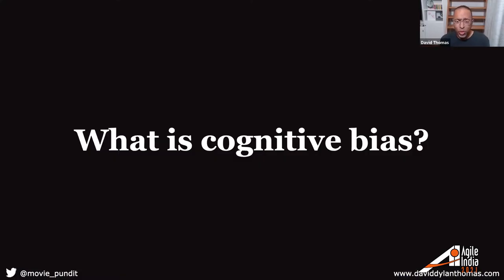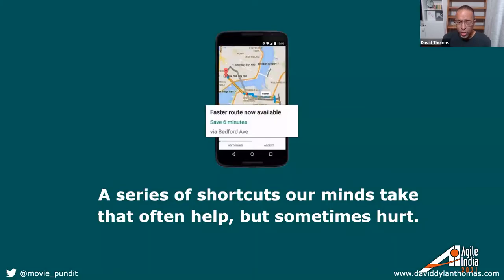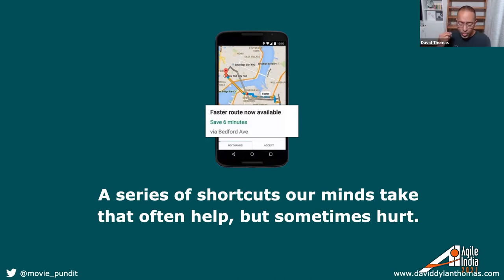It's worth establishing from the start: what is cognitive bias? At the end of the day, it's a series of shortcuts that your mind is taking just to get through the day. We have to make something like a trillion decisions every single day — where to look, what to do with my hands, how fast to talk. If I thought carefully about every single one of those decisions, I'd never get anything done. So it's actually a good thing that a lot of our lives are spent on autopilot. The problem is, sometimes the autopilot gets it wrong, and we call those errors cognitive biases.